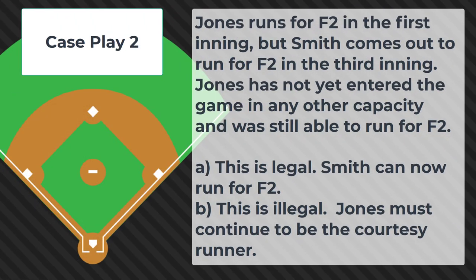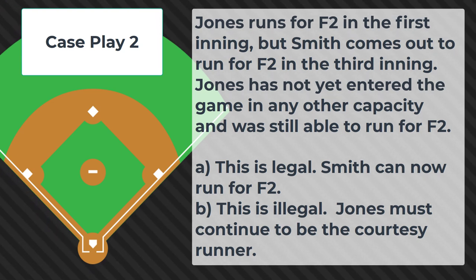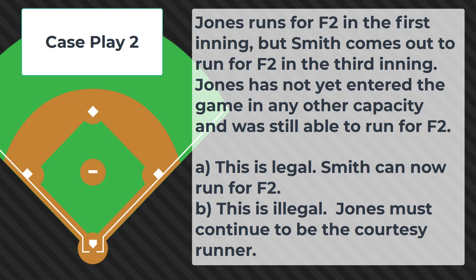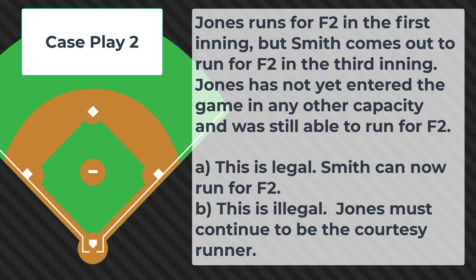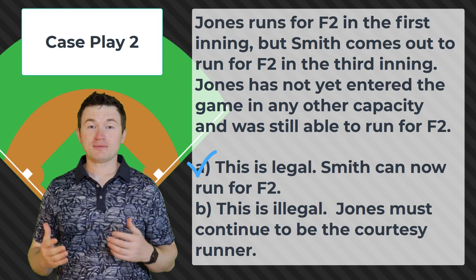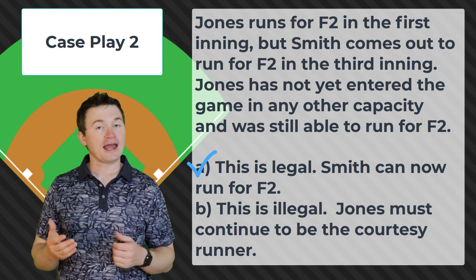Case play number two: Jones runs for F2 in the first inning, but Smith comes out to run for F2 in the third inning. Jones has not yet entered the game in any other capacity and was still able to run for F2. Is this: A — legal, Smith can now run for F2, or B — illegal, Jones must continue to be the courtesy runner? The correct answer is A, this is legal — a team can use any eligible player on their bench as a courtesy runner as they choose.